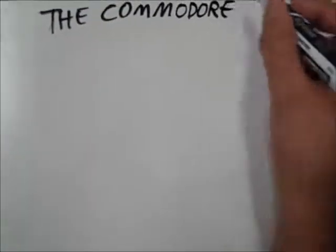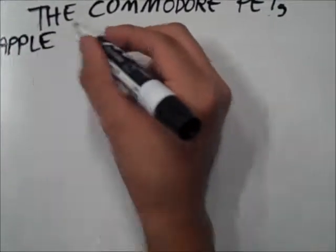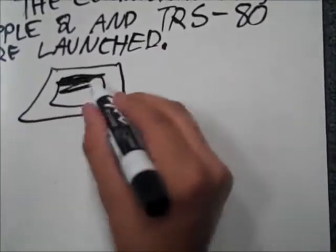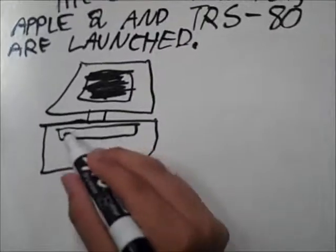The Commodore PET, Apple II, and TRS-80 all launched in 1977, designed by Commodore, Apple, and Radio Shack respectively.